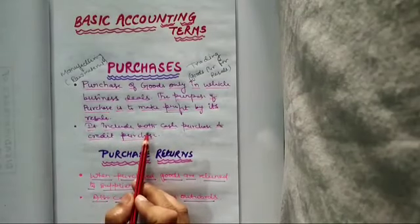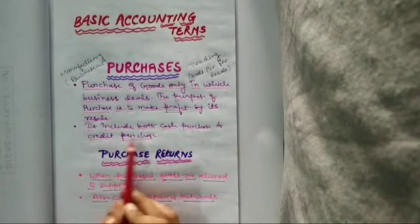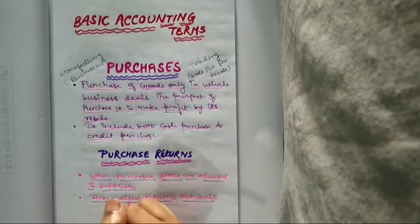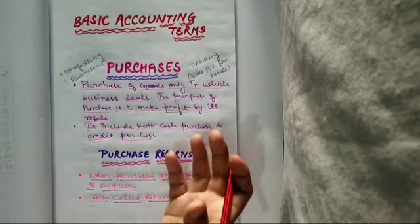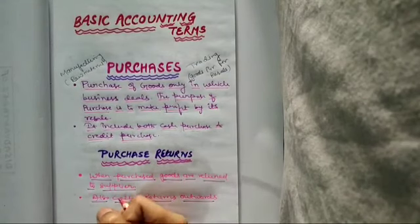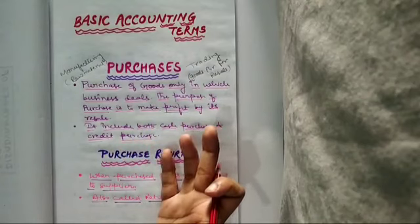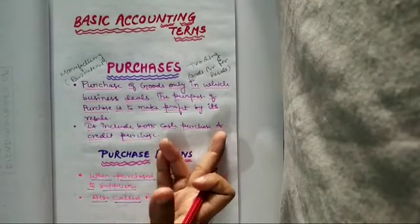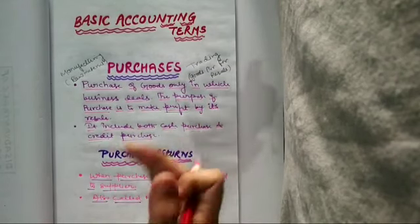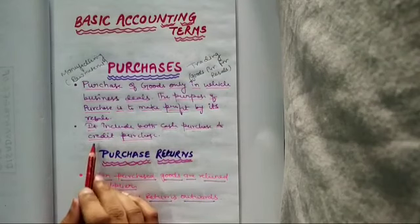Purchases include both cash purchase and also credit purchase. Cash purchase means that goods purchase and payment made in cash कि हमने वहें कहीं से goods खरीदे businessman ने और उसका payment prompt, immediate उसी time पर cash में payment कर दिया और जब हम business करते हैं तो सर्फ cash में ही काम नहीं चलता बलकि बहुत सारे work हमें उल्हारी में भी करना पड़ते हैं.